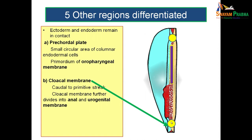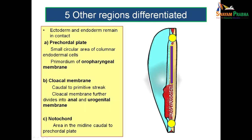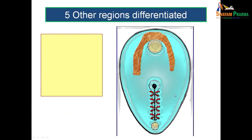Similar to the cranial region, at the caudal region you have the cloacal membrane, lying caudal to the primitive streak. The cloacal membrane is divided into two by the urorectal septum — into the anal membrane and the urogenital membrane. The urorectal septum divides the cloaca into the primitive urogenital sinus and the primitive rectum, and reaches up to the cloacal membrane where it splits it into the anal membrane and urogenital membrane. Along the midline, you also would not get intraembryonic mesoderm along the notochord.